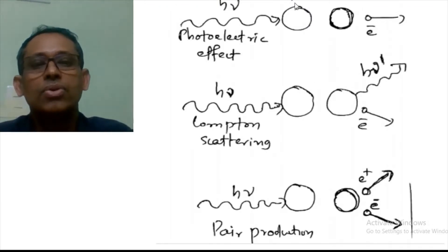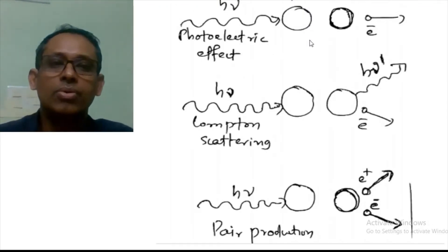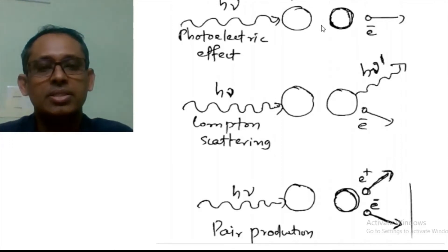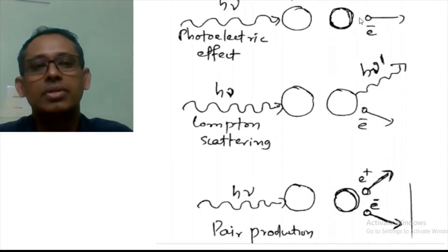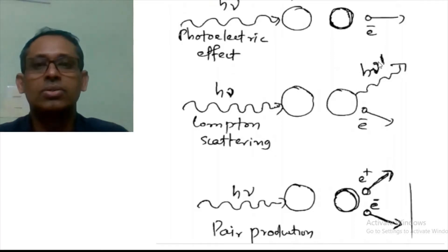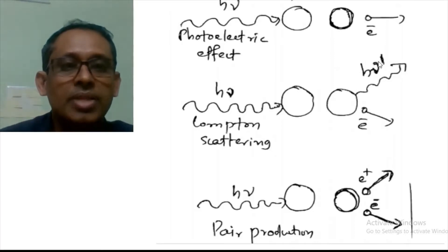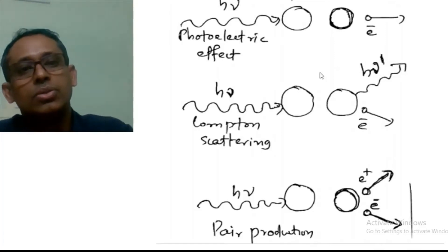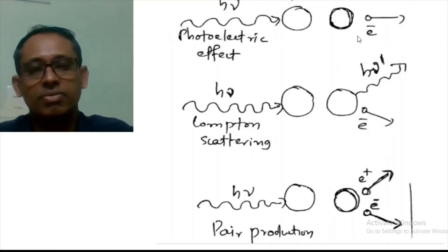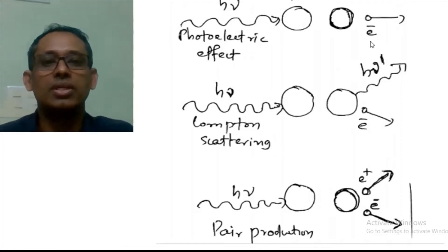In the photoelectric effect, we see an incoming photon that is completely absorbed by an atom, and an electron gets ejected from the atom. This is the photoelectric effect — a complete absorption of the photon occurs here.